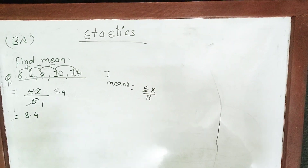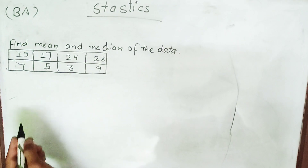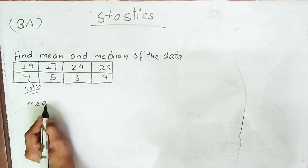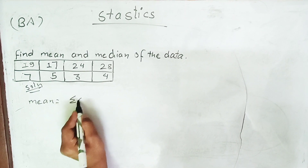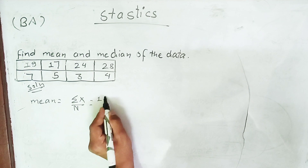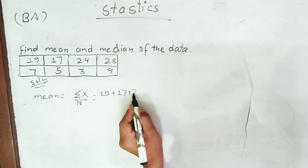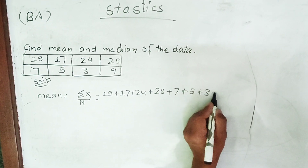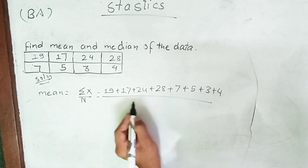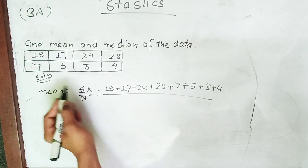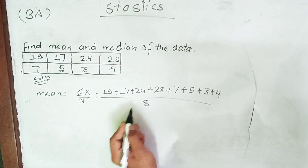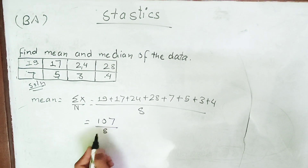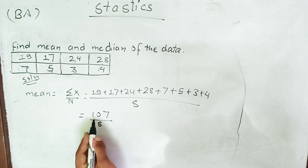I will solve this. I will take a solution. Now, the mean is: summation x upon n, which means 19 plus 17 plus 24 plus 28 plus 7 plus 5 plus 3 plus 4, divided by n, where n equals 8. That gives us 107 divided by 8.